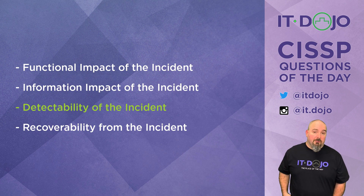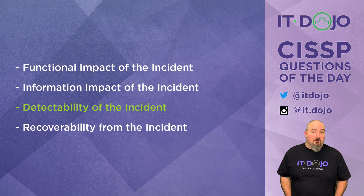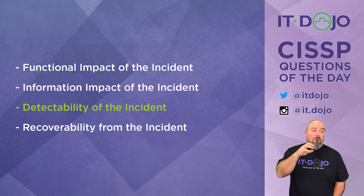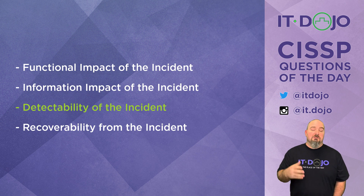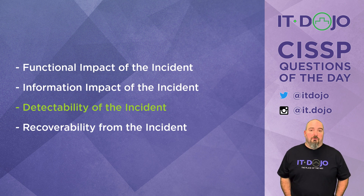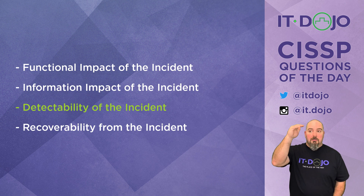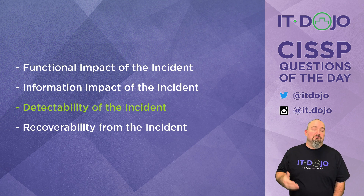That means the last one — recoverability — which is your evaluation of what it is going to take to recover from this incident: how much is involved, what resources do we need, can we do this in-house with the tools we've got, do we need to acquire additional tools, or are we going to require external parties to facilitate and help? Those kinds of considerations are also going to play into how you prioritize responses. So functionality, information impact, and recoverability are the critical consideration factors for determining your triage or hierarchy when responding to events.